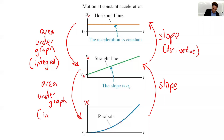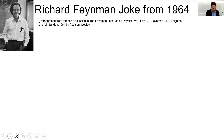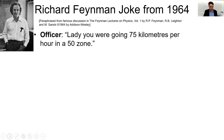Where you take the derivative of position versus time to get velocity. There's also a joke from Richard Feynman about a woman pulled over for speeding. The officer says: 'Lady, you were going 75 kilometers per hour in a 50 zone.' The lady says: 'I'm sorry officer, but that can't be — I've only been driving for five minutes.' She is confusing speed with distance traveled.